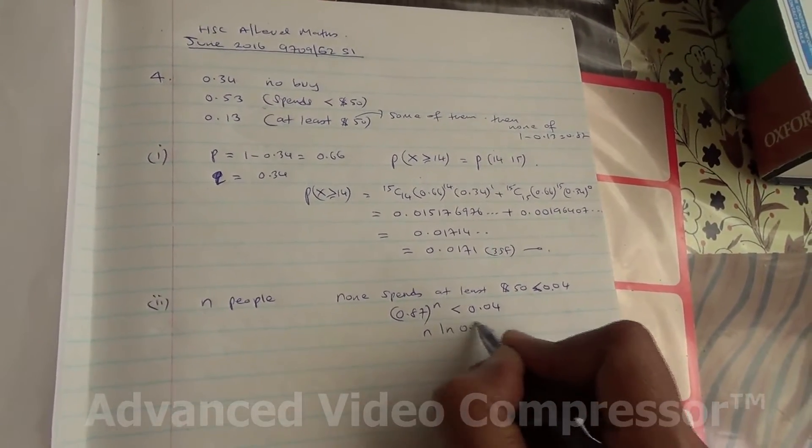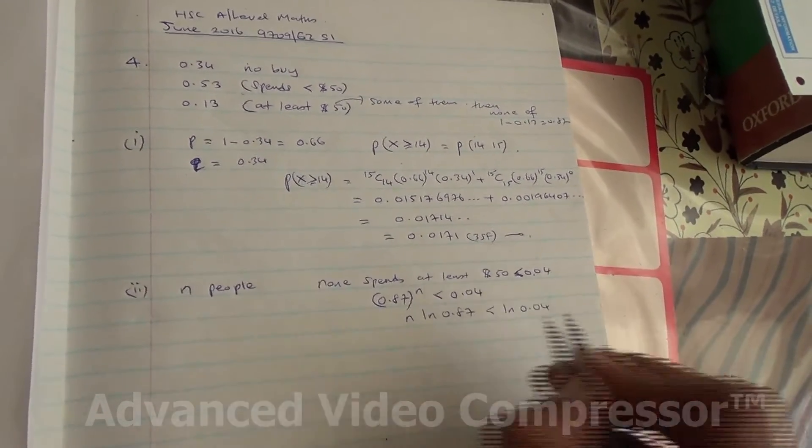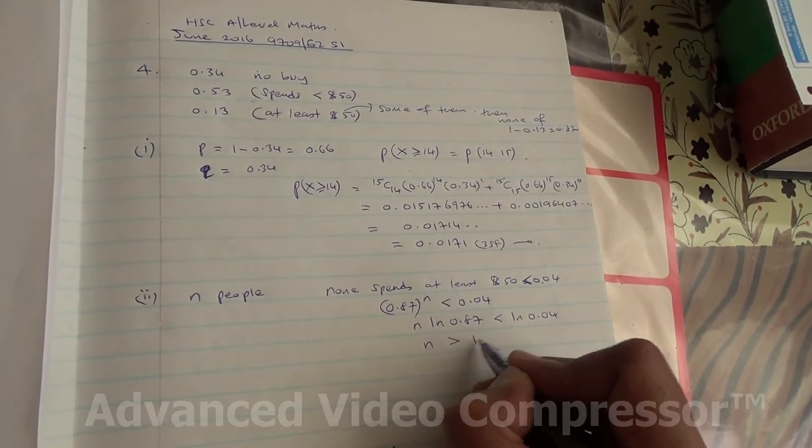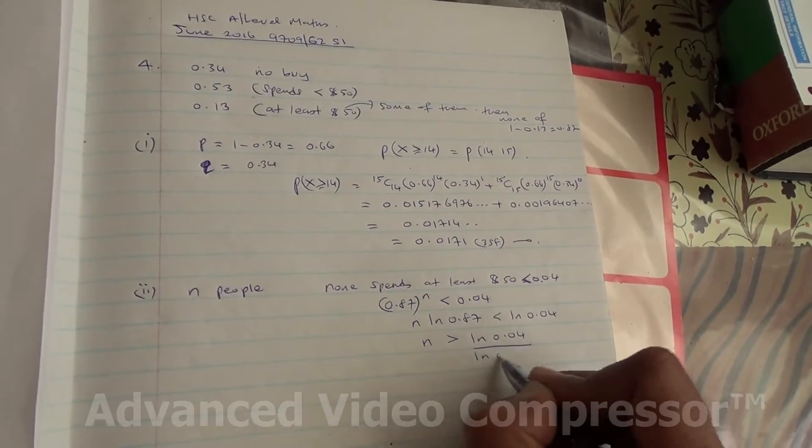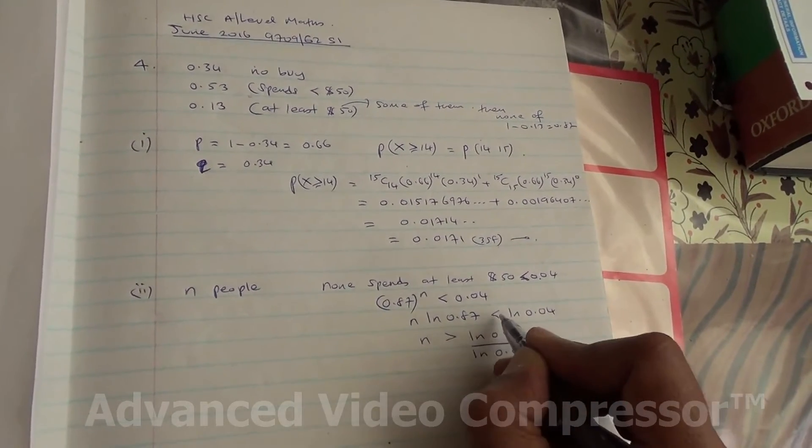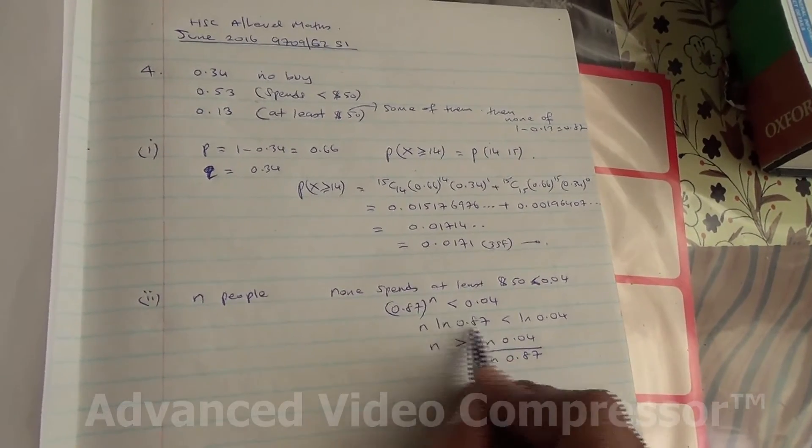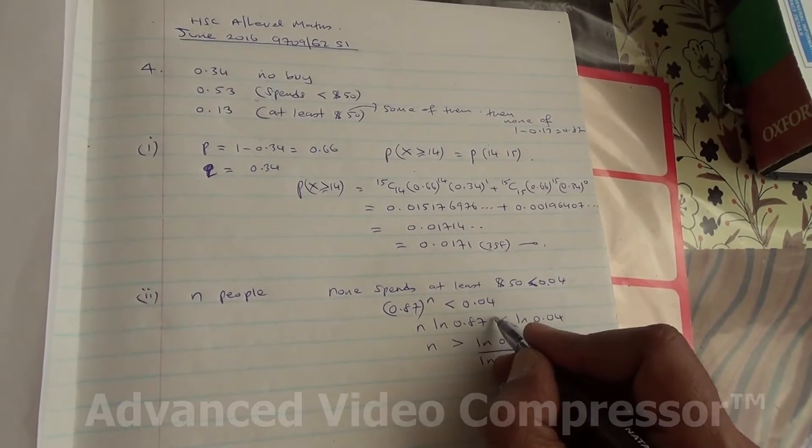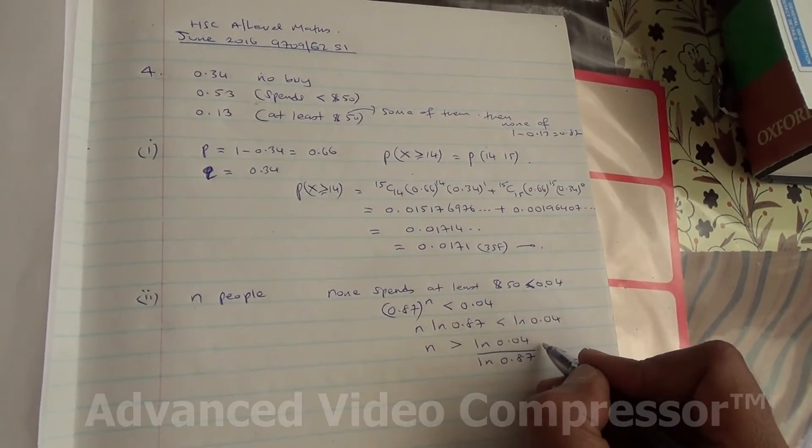So, ln 0.87, if you know your maths quite well, you should know what I'm talking about here. So, N is going to be then greater than ln 0.04 divided by ln 0.87. Why the sign has changed from being less to greater? Because the ln 0.87 is negative. And when negative goes on the other side, the sign will change from less to greater, or from greater to less.